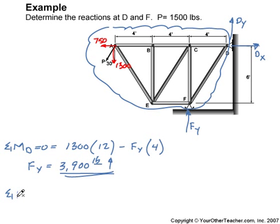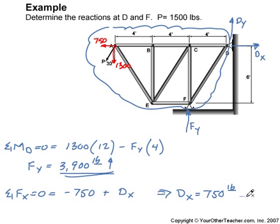And now summation of the forces in the X equals zero. So we have negative 750, that's to the left, plus D_X. Therefore D_X is equal to 750 pounds, and since we got a positive value, the arrow is correct.